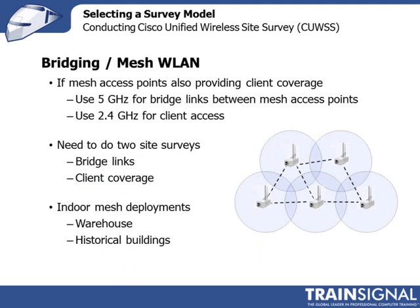It's very common when deploying a dual-mode access point to use the 5 GHz radio for bridge connections — the backhaul between access points — and use the 2.4 GHz radio to provide connectivity to clients. For example, a laptop would connect to the access point using the 2.4 GHz radio, and that traffic would travel hop by hop across the mesh network on the 5 GHz band until it reached the root access point, then go onto the wired network.